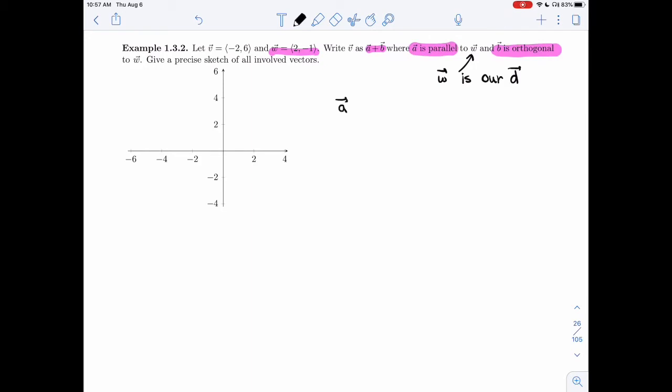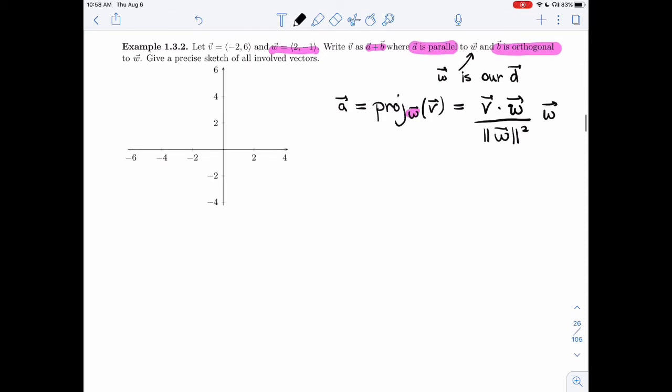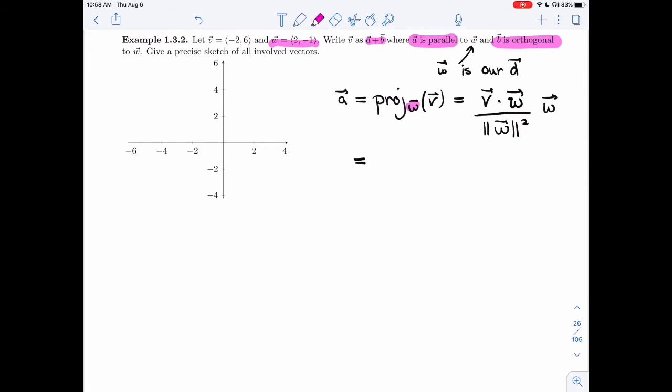So let's find A. A is parallel, so that means it's the projection of V onto W. Again, the direction goes in the index here. And the formula tells us to take the dot product of V and W, divide by the length of W squared, and multiply by W. So the direction appears a lot in this formula: W, W, W, W. V's there only once. So let's take the dot product of these two vectors here: -2 times 2 plus 6 times -1. Then I need the length of W squared, so that's (√(2² + (-1)²))² and then W.